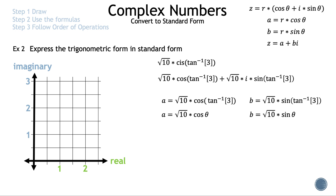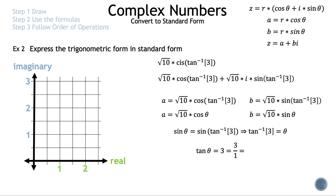Now we have something familiar. We can use tan⁻¹ 3, the graph, and SOHCAHTOA to find cos θ and sin θ. We are going to use sine. Since sin θ = sin(tan⁻¹ 3), we can set θ = tan⁻¹ 3. Working backwards and taking tangent of both sides, we get tan θ = 3, or 3/1.